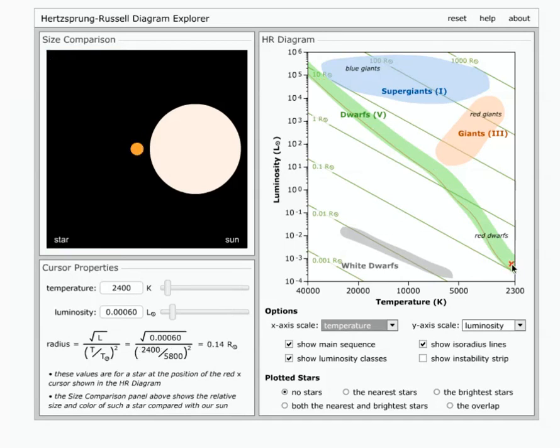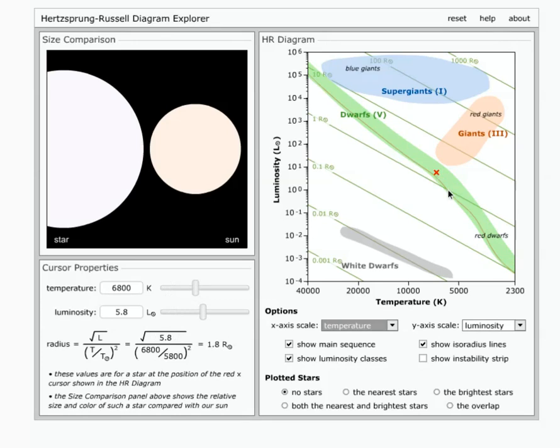And if we go to the other corner, we could say that this part of the HR diagram, they're cooler and fainter and redder and smaller. And then in the middle, that's approximately where our sun is.